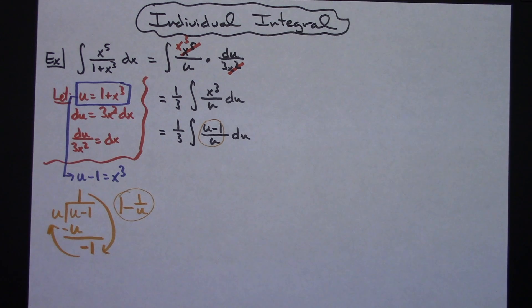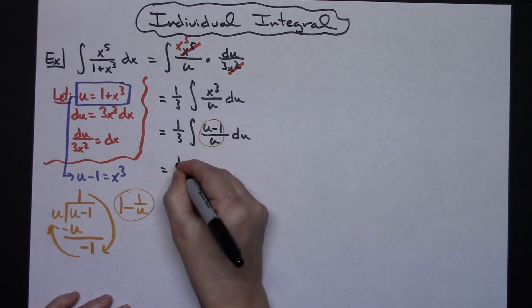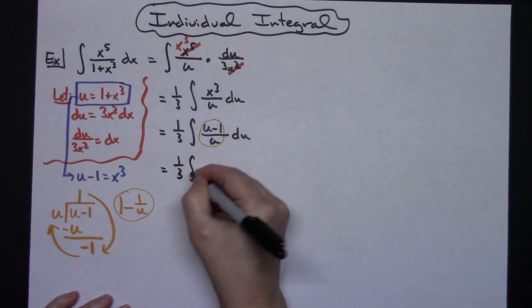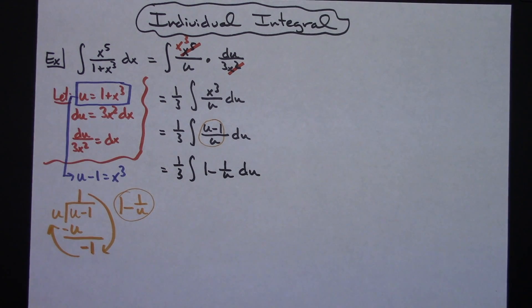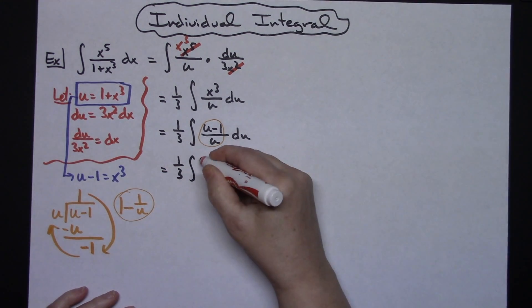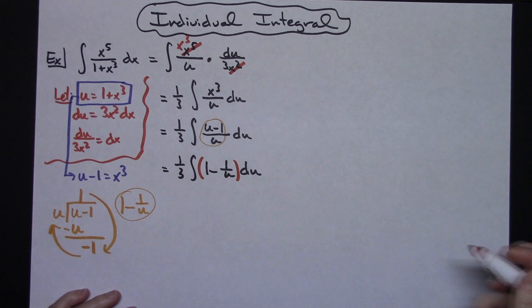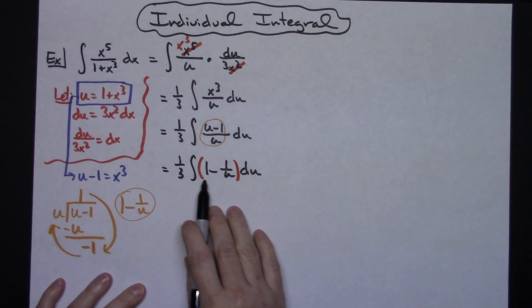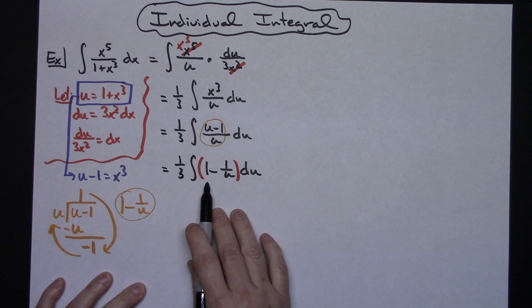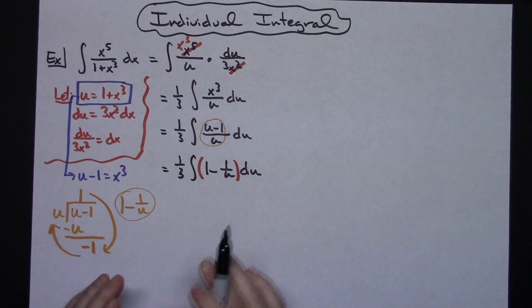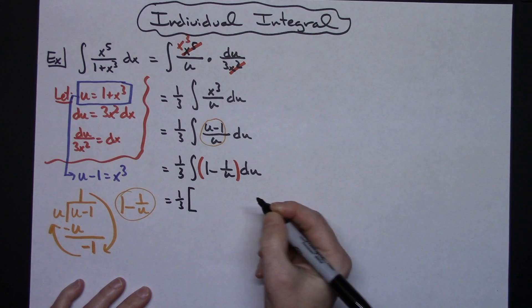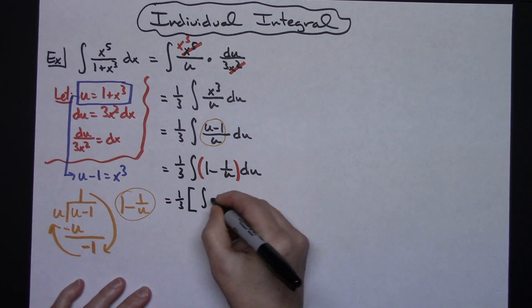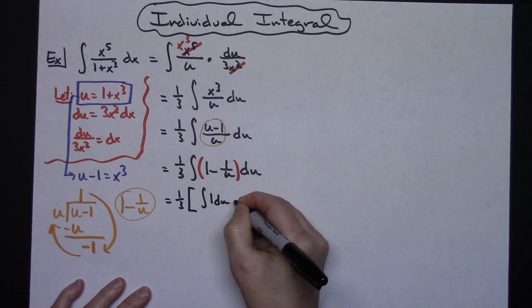Now I can rewrite that. I'll have 1/3 the integral of 1 minus 1 over u du. A lot of times people will put a set of parentheses in here because I really am taking the integral of everything right there. At this point you could integrate them individually. I think I'm going to go ahead and separate it and write it as two separate integrals. I'm going to have 1/3, square brackets, and then I'm going to integrate 1 du minus the integral of 1 over u du.